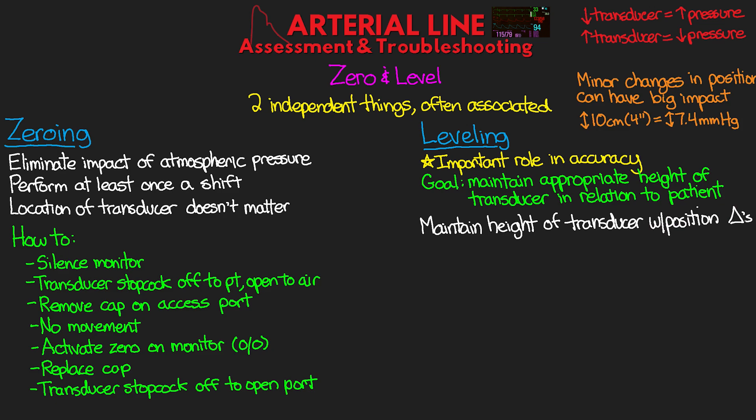If the transducer is below the proper level, we'll see a higher pressure than what it actually is. If it is above the proper level, we'll see a lower pressure. For example, if you've lowered the bed but didn't move the transducer, it's now higher than it was — giving you a falsely low blood pressure reading, which could lead to improper treatment.